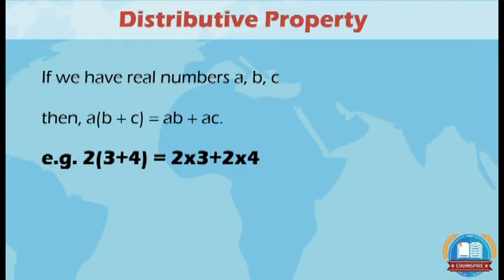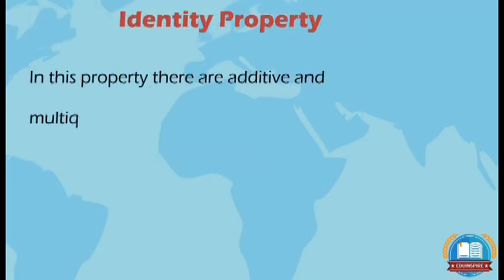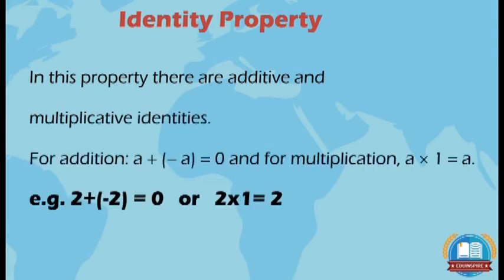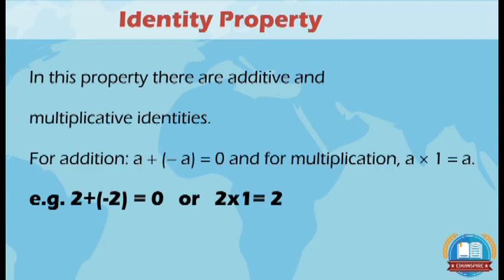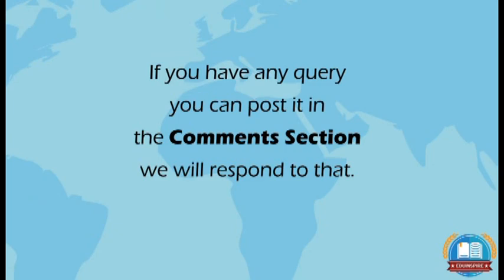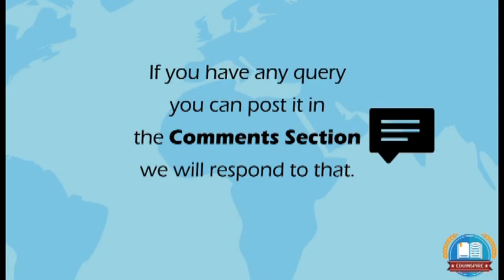The fourth property is identity property. In this property, there are additive and multiplicative identities. For addition, A + (-A) = 0, and for multiplication, A × 1 = A. Example: 2 + (-2) = 0 and 2 × 1 = 2. So this is all about real numbers. If you have any query, you can post it in the comment section and we will respond. Thank you.